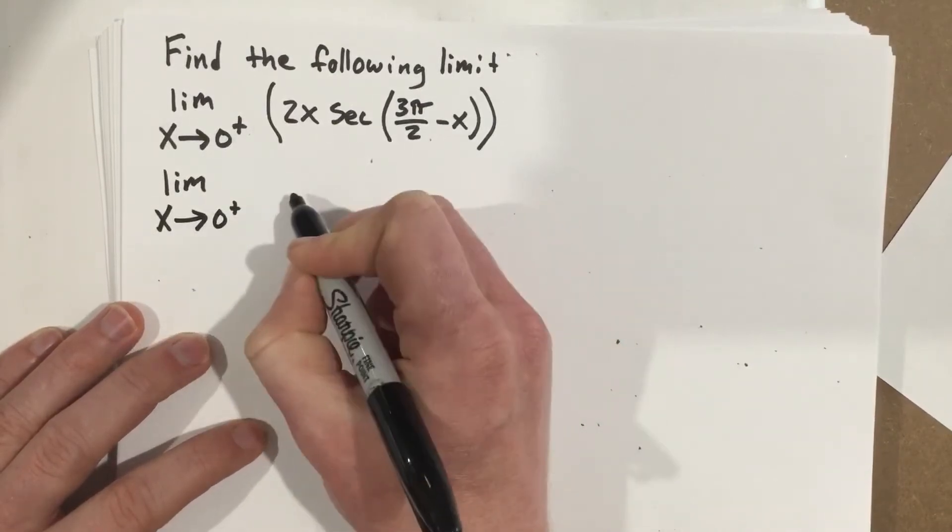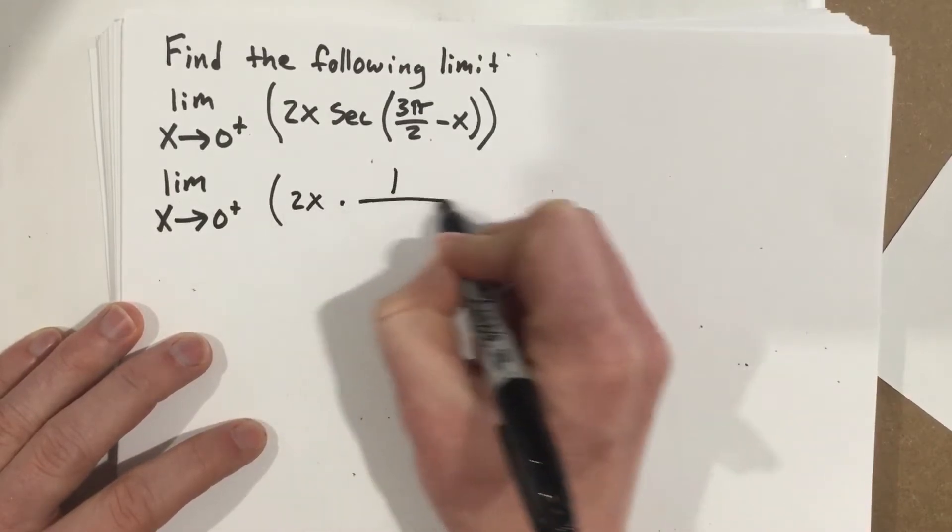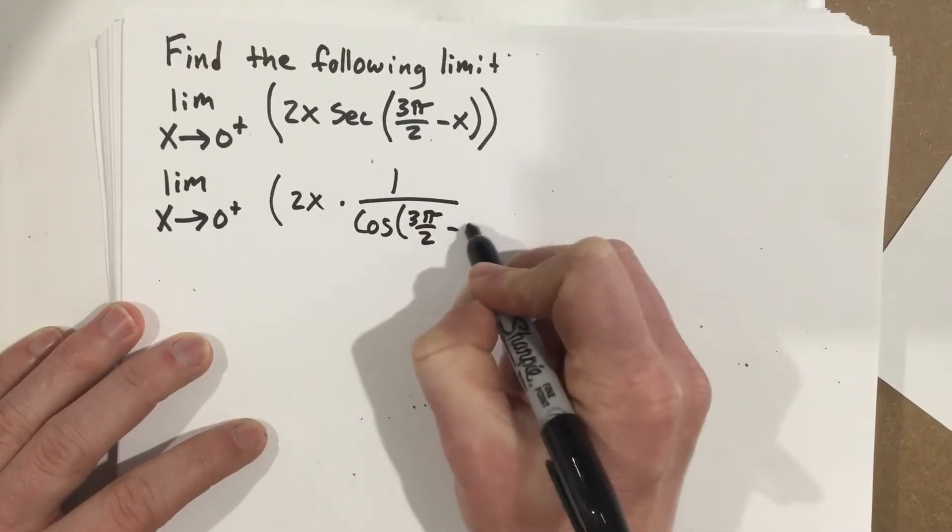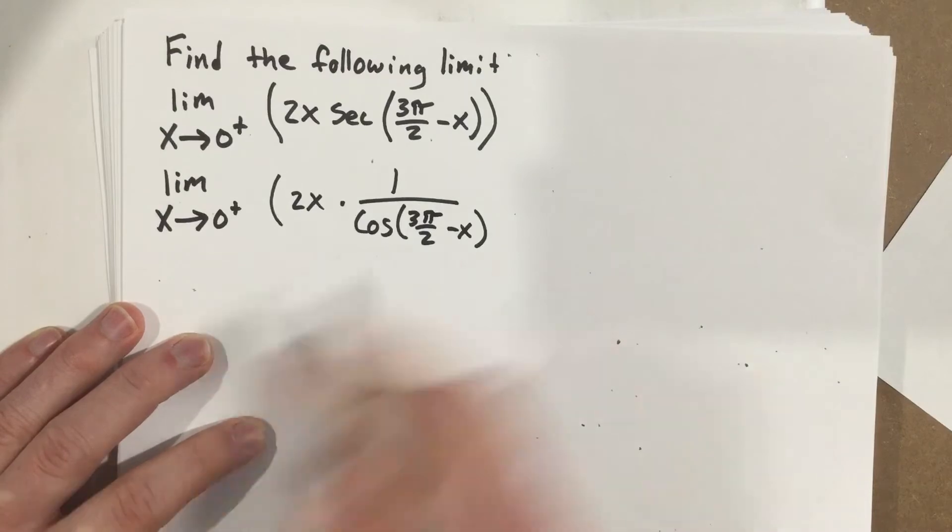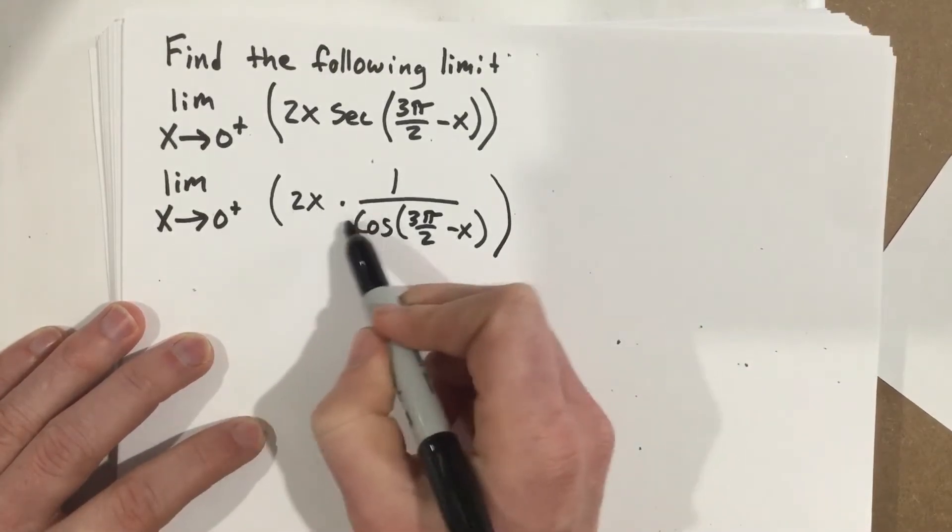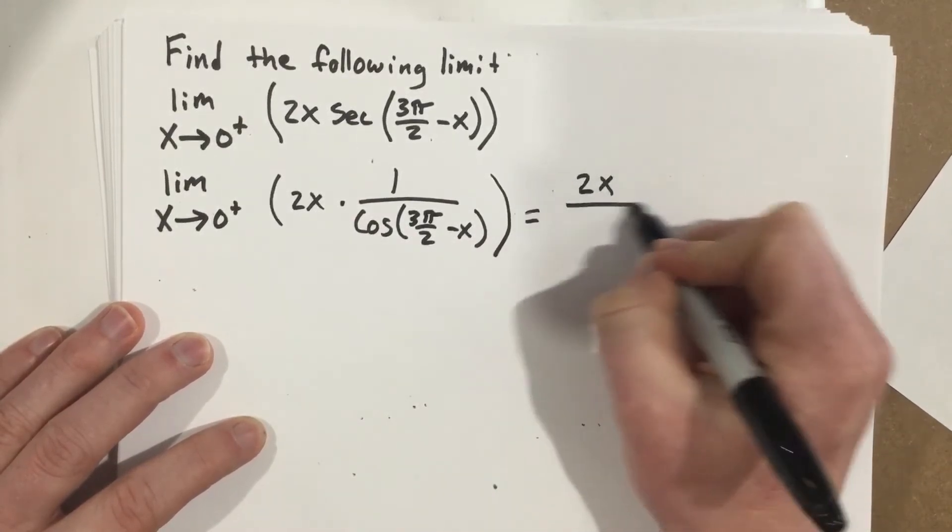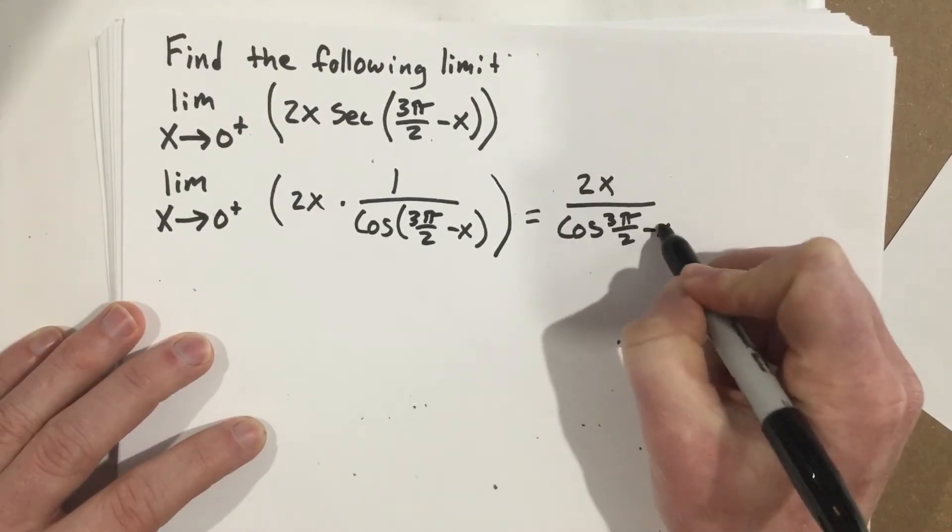We're going to rewrite this as limit as x approaches 0 from the right. This would be 2x times 1 over cosine 3π over 2 minus x. Now I can combine this together and say that this is 2x over cosine 3π over 2 minus x.